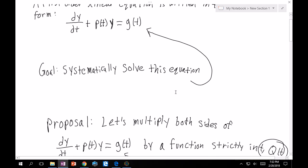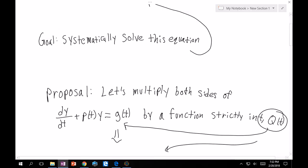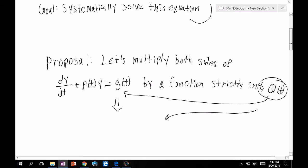So the first thing that I think we should do is multiply both sides of this equation by some function Q(t) that is only a function in t. So multiplying this Q(t) onto dy/dt plus p(t)y equals g(t), we're going to get the following.